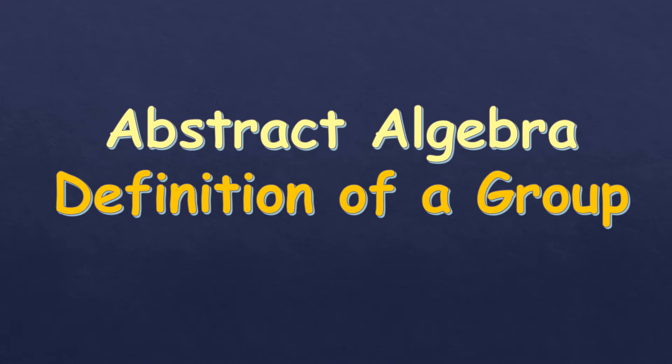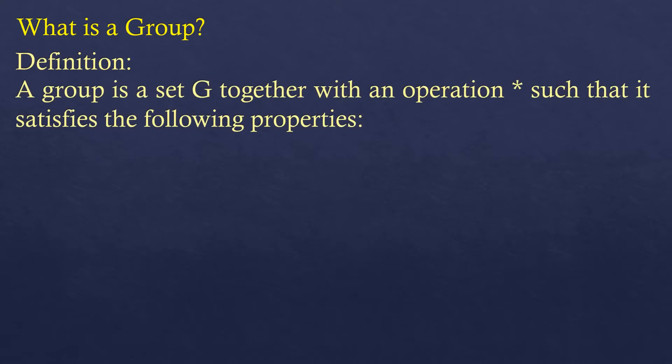In this video, we're going to talk about a topic under abstract algebra, specifically the definition of a group. A group is a set G together with an operation star — star can be either plus, times, or other non-standard operations — such that it satisfies the following properties.